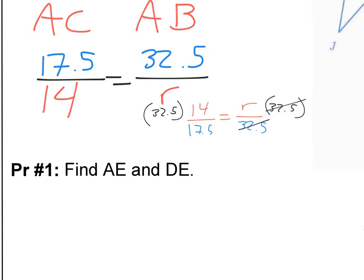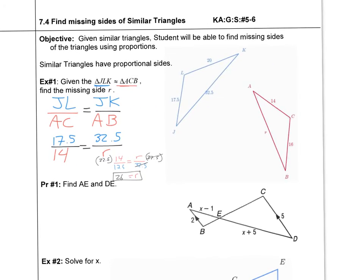That cancels and now R is by itself. It's just a simple calculation: 32.5 times 14 divided by 17.5. 32.5 times 14 is 455, and 455 divided by 17.5 is 26. So R equals 26. I found the missing side just by setting up a proportion and solving — pretty easy.